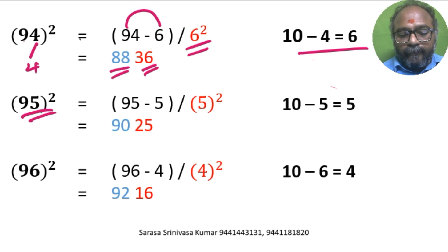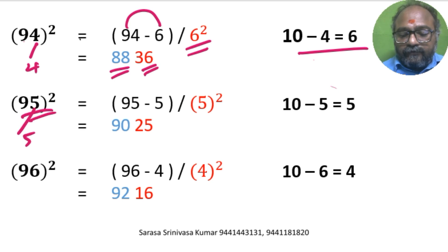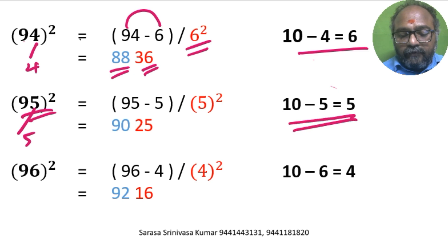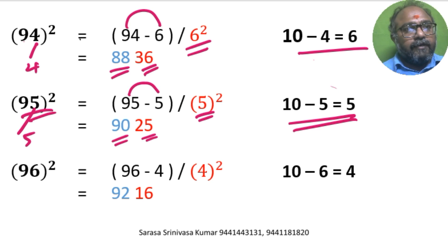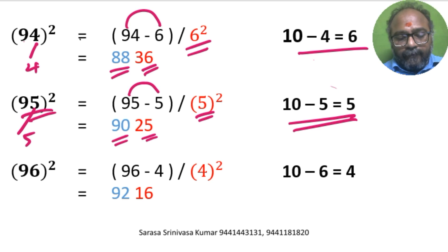95 square. Units digit is 5. So 10 minus 5 is 5. 95 minus 5 is 90. 5 square is 25. So 90, 25 is the answer.